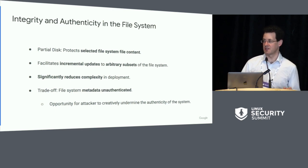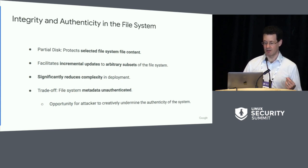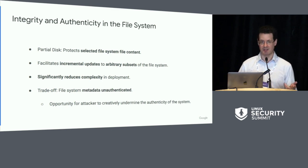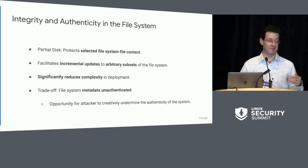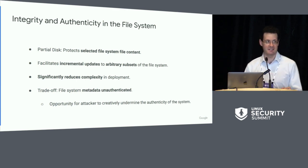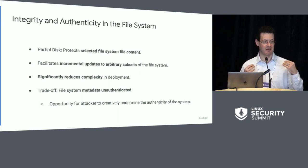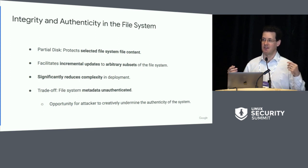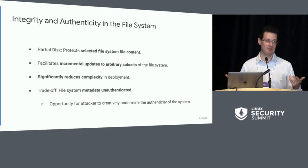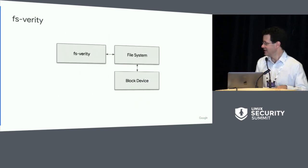So we start looking at the file system as a way to address this issue — partial disk authentication, where selected parts of the file system, primarily the file contents, are validated using authenticated dictionary structures. This facilitates incremental updates of arbitrary subsets of the file system and significantly reduces deployment complexity. The trade-off is that file system metadata is unauthenticated, which could allow manipulation of block mappings or directory structures to trick applications into behaving in unintended ways.